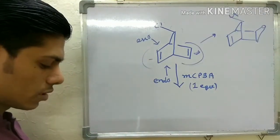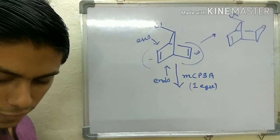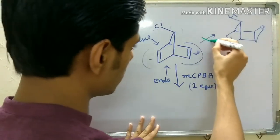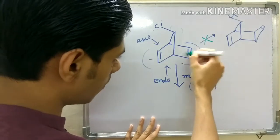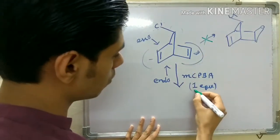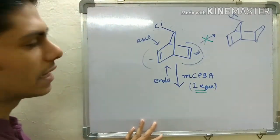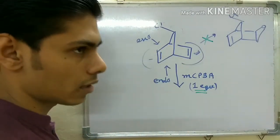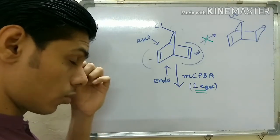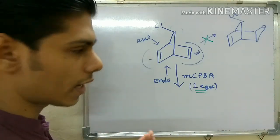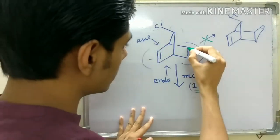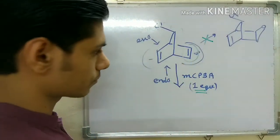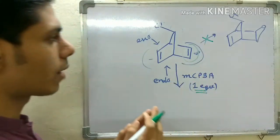If that is your answer, you are actually wrong. This double bond will never react if you use one equivalent of MCPBA. Instead, the other double bond will react. Which face it will react on is another question I don't want to discuss right now, but the fact is that this double bond will not react - the other one will react. Why is this so?